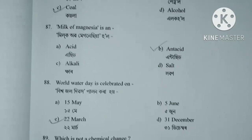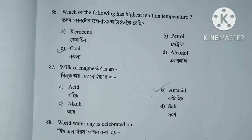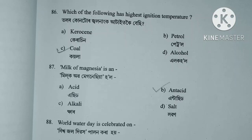Question number 86. Which of the following has the highest ignition temperature? Option B — Kerosene, Petrol, Coal, and Alcohol. Kerosene, Petrol, Coal and Alcohol.